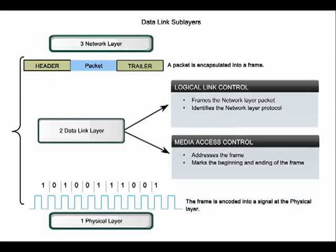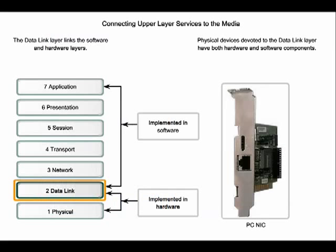To support a wide variety of network functions, the data link layer is divided into two sub-layers. The upper sub-layer is called the logical link control, and the lower sub-layer is called media access control. Separating the data link layer into sub-layers allows for one type of frame — for example, an Ethernet frame — to access different types of media defined by the lower layer, such as a Wi-Fi network and a wired network. The logical link control sub-layer places information in the frame that identifies which network layer protocol is being used, allowing multiple layer 3 protocols to utilize the same network interface and media.